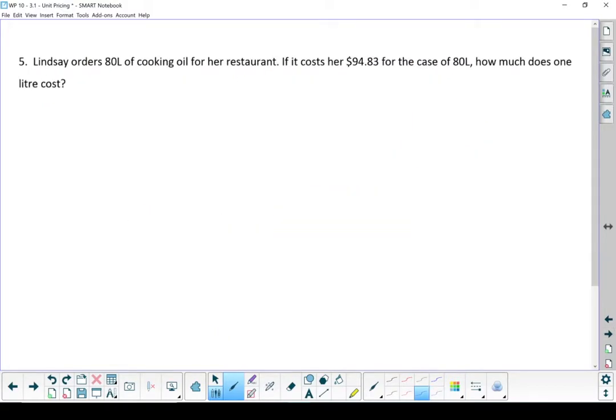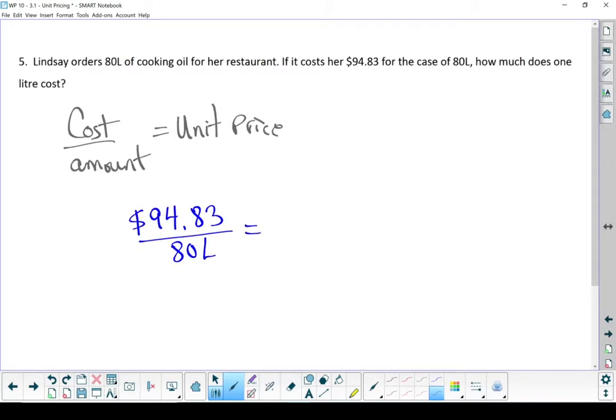All right, so Lindsay orders 80 liters of cooking oil for a restaurant. The whole case of cooking oil costs her $94.83 and she gets 80 liters. What's her unit price? What is she paying per liter? Put her numbers in. $94.83 divided by 80 liters gives us a cost of $1.19 per liter.